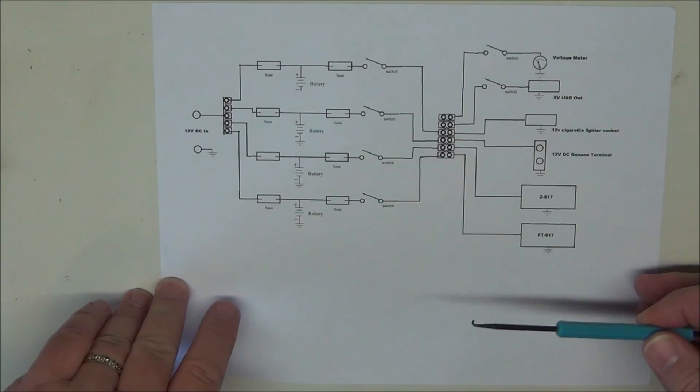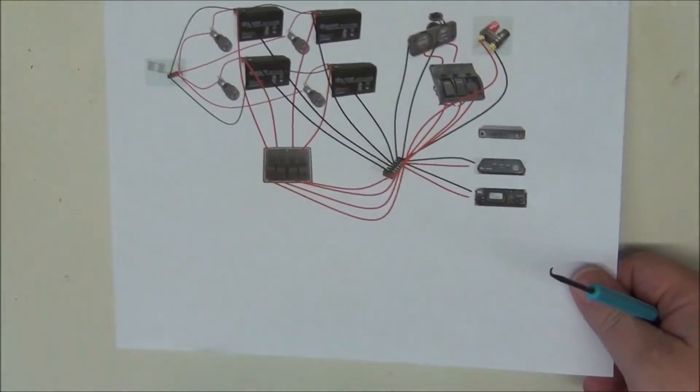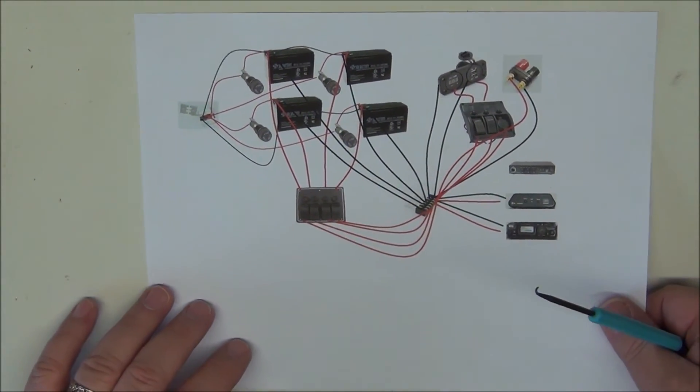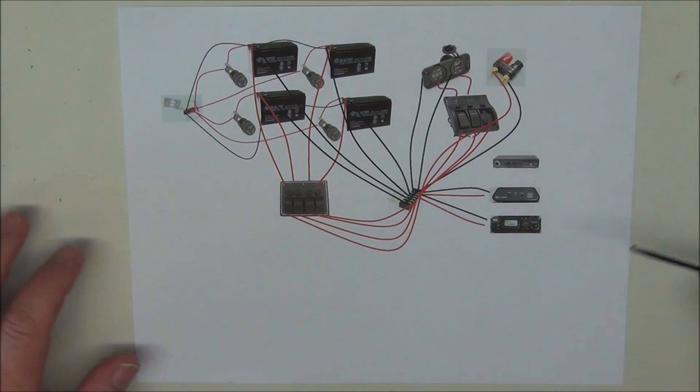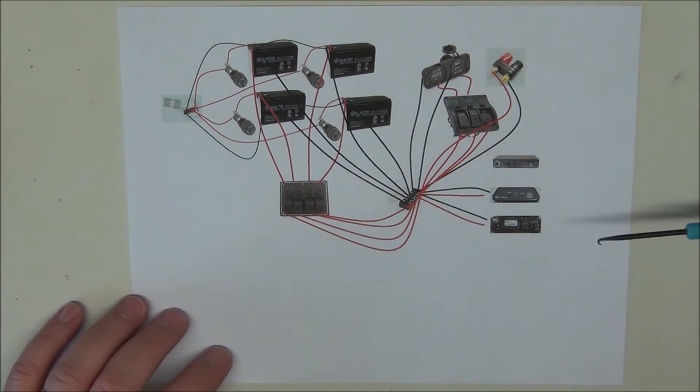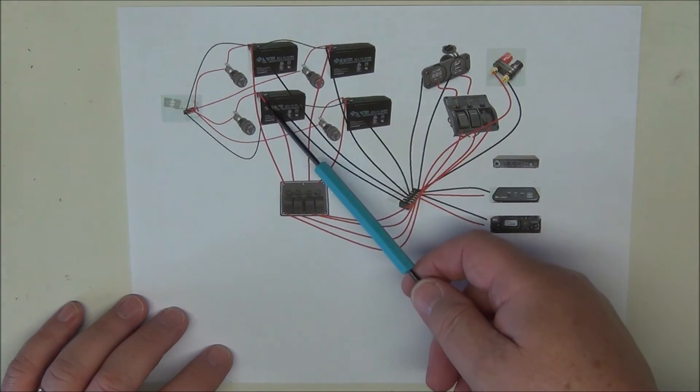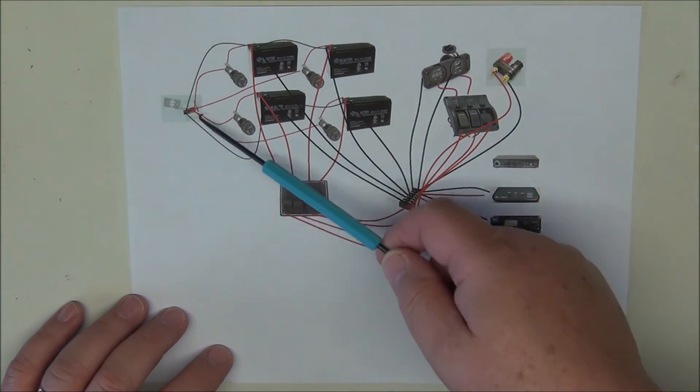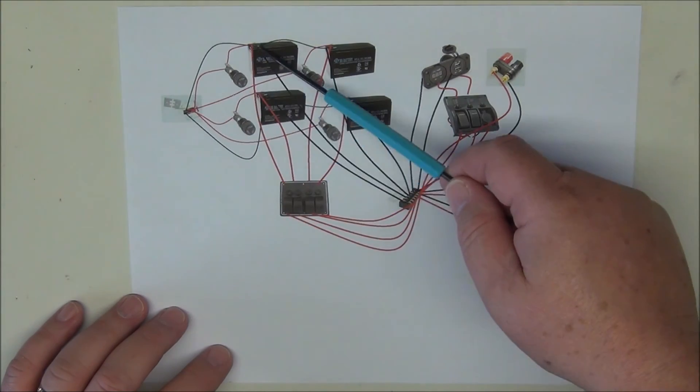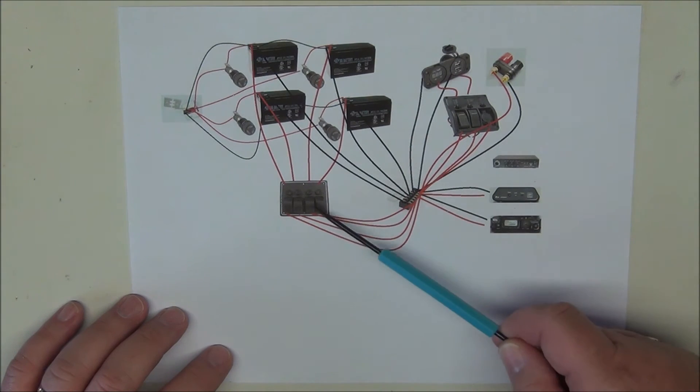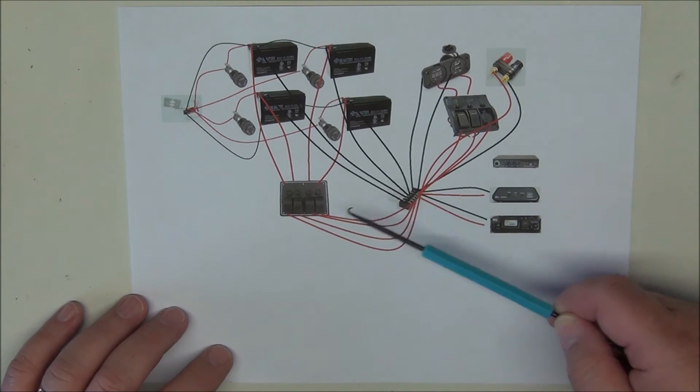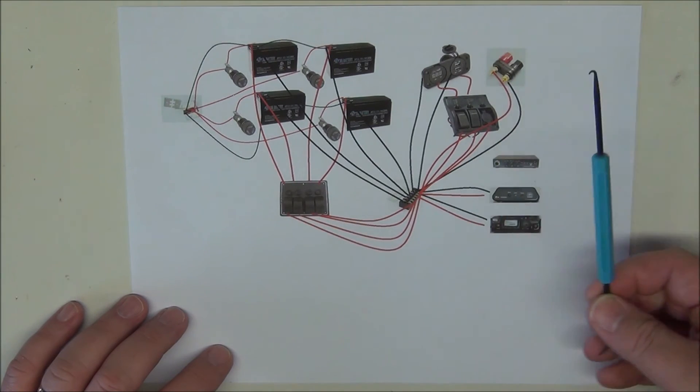Now that's sort of the schematic layout. This is sort of the physical layout or how everything will be connected. We have ground of course going to each of the batteries. Now this will be through a terminal block on this side. Each battery will have its own fuse. I'm going to be using a panel mounted 4 gang switch and each of these have a fuse. Off of the terminal block on the powered side.